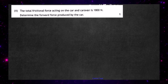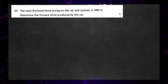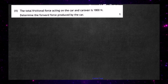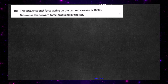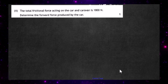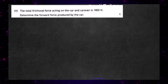Part A2: the total frictional force acting on the car and caravan is 1,800 newtons, and for one mark we're asked to determine the forward force produced by the car. The car is travelling up the slope at a constant speed of 4 metres per second, which means the forces are going to be balanced — the net force up the slope equals the net force down.